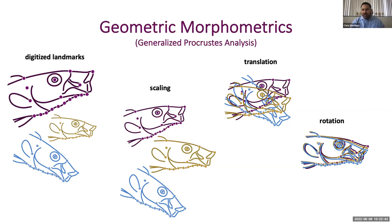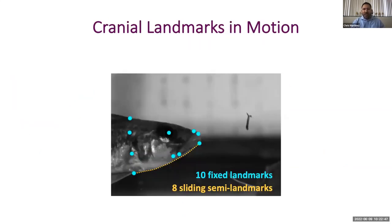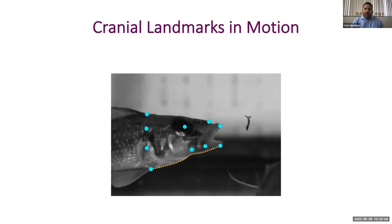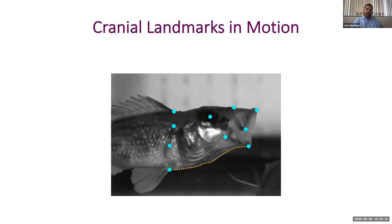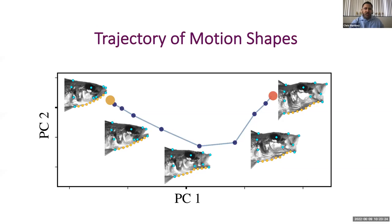Similar to what Aki described, we start by assigning landmarks or homologous anatomical loci to images of specimens varying in size and orientation. During a shape alignment called Generalized Procrustes Analysis, we scale the landmark configurations to a common size, translate them to the same location, and rotate them to reduce landmark distances across specimens. This analysis is typically used to study non-moving morphologies, but I'm interested in motion. Here's an example where I use 10 fixed landmarks in blue and eight sliding semi-landmarks distributed at equal distances along the yellow dotted line to capture the curvature along the bottom of the head.